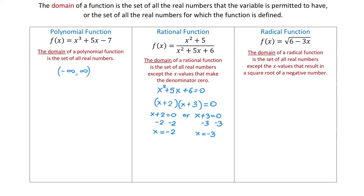To understand how to write the interval notation, let's look at the number line. As we go right we move toward positive infinity, and to the left toward negative infinity. Negative 3 is to the left of negative 2 because negative 2 is greater than negative 3. These two numbers split the entire number line into three intervals: from negative infinity to negative 3, between negative 3 and negative 2, and all numbers greater than negative 2.